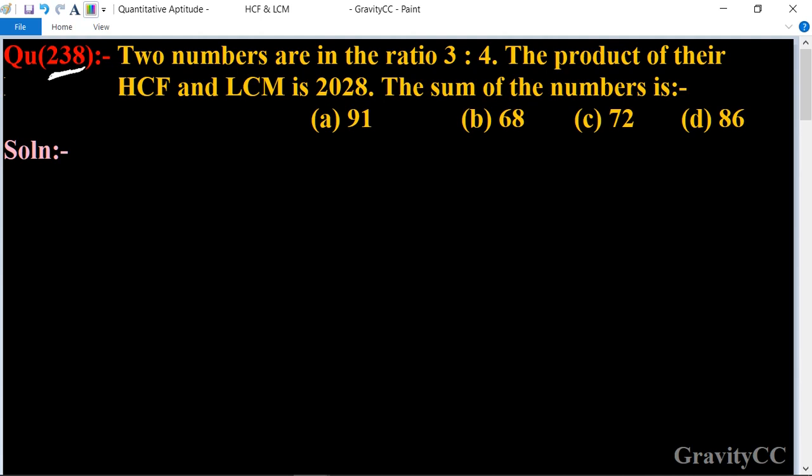2028. The sum of the numbers is? So in this question, given that the ratio of two numbers is 3:4 and their product of HCF and LCM is 2028, what is the sum of these numbers?